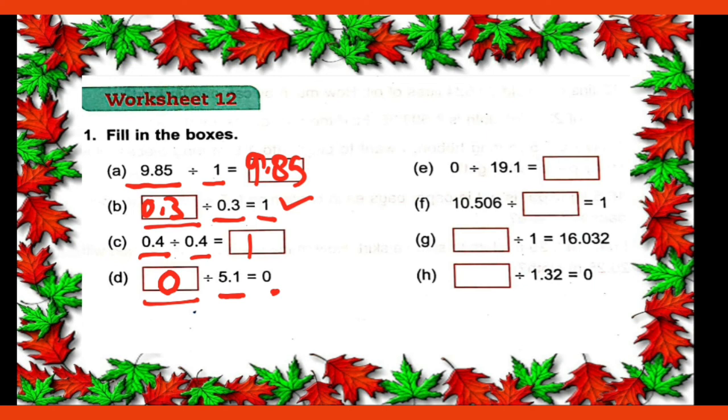You divide 0 by any number, 0 you divide by any number whether whole number, decimal number, fractional number, your answer always comes as 0. And 0 divided by 19.1, meaning you are dividing 0 by a decimal number. So answer will be 0 only. Right? And 10.506 you have divided by any number. And answer is 1. One comes as answer in your quotient when dividend and divisor are same. So divisor will also be 10.506.